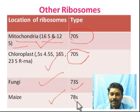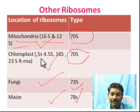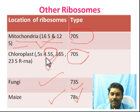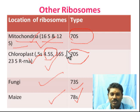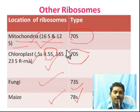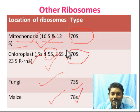Fungi have 73S type ribosomes and mice have 78S type. In chloroplasts, there are 5S, 16S, and 23S rRNA — and also 4.5S type. So chloroplasts have a specific type of ribosome composition.